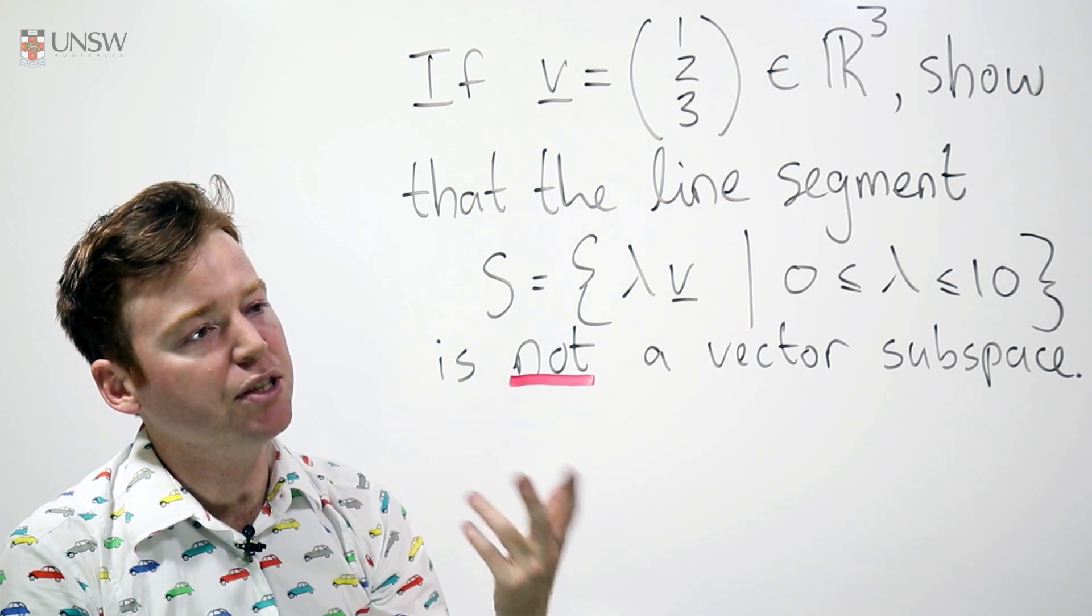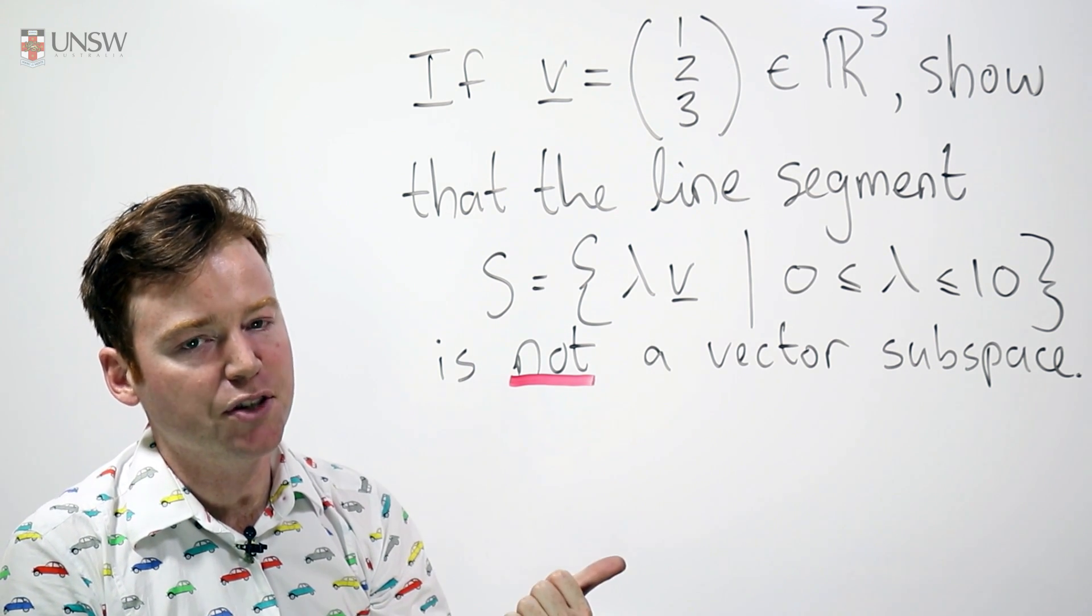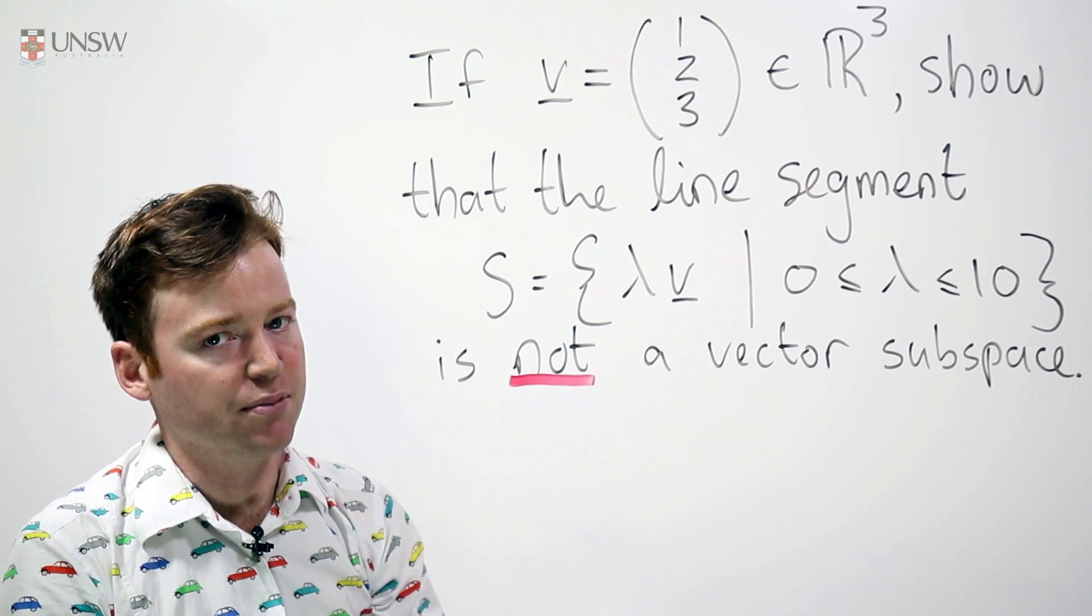most of the vector space axioms are going to hold for free. The only ones that possibly don't hold are inclusion of 0, closure under addition, and closure under scalar multiplication.